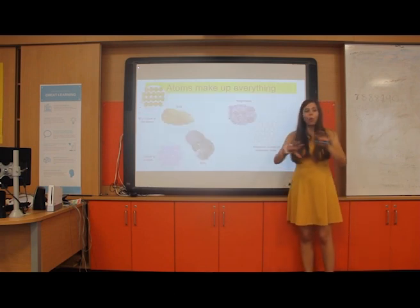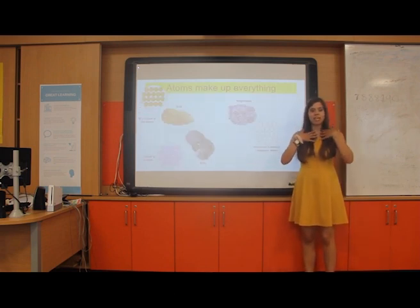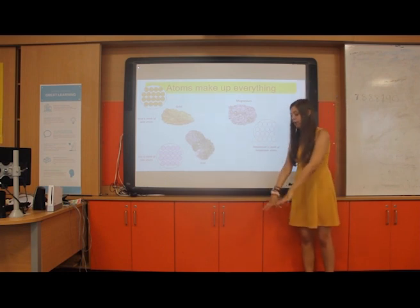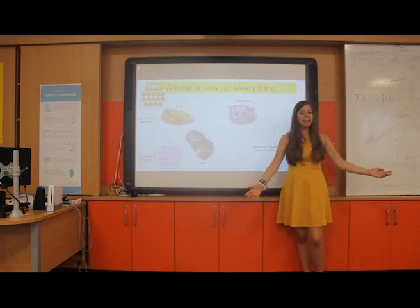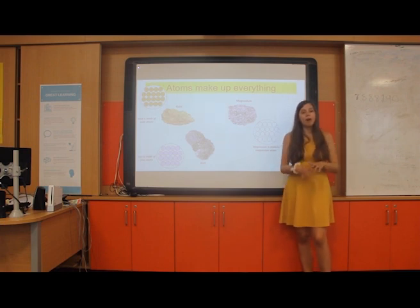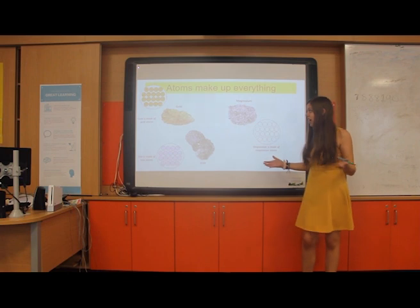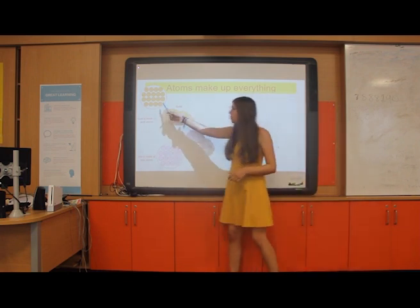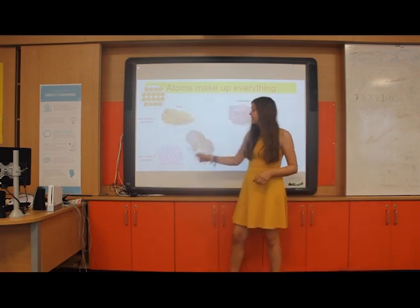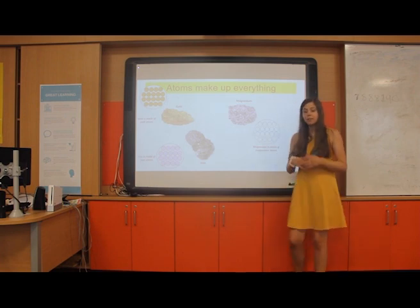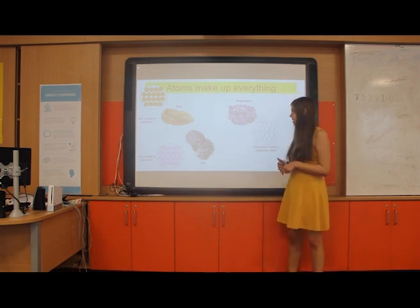Atoms are all around us. They're inside of me, they make up you, they're part of my hair, they're part of the floor, they're part of the air, they're part of your ceiling, they're part of absolutely everything around us. They're just made up of lots of different types. For example, we've got gold atoms, iron atoms and magnesium atoms, lots and lots of different types.